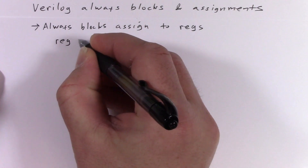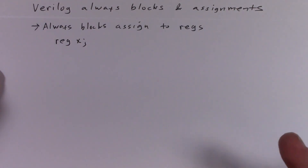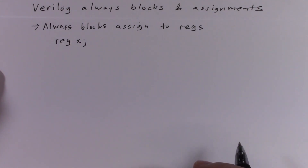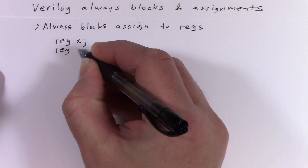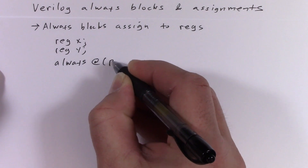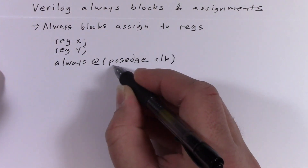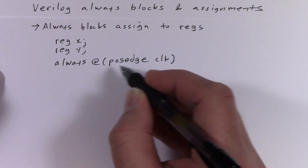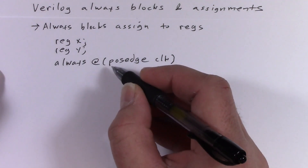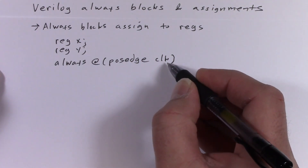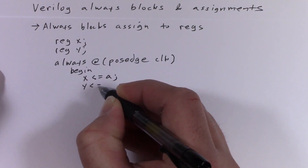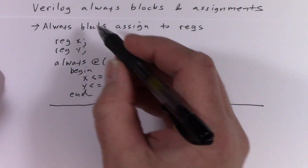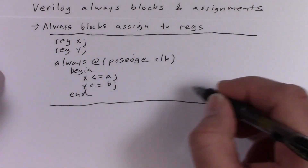First, let's make an edge-triggered D flip-flop. This is perhaps the most common storage element you would use in an FPGA. I'll make two. This is the sensitivity list and it tells the always block that we want the body to happen at a rising clock edge. And that's it — we just made two edge-triggered D flip-flops.